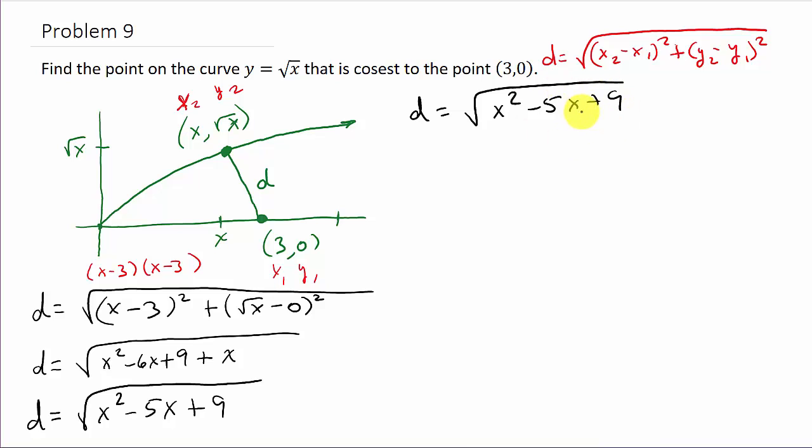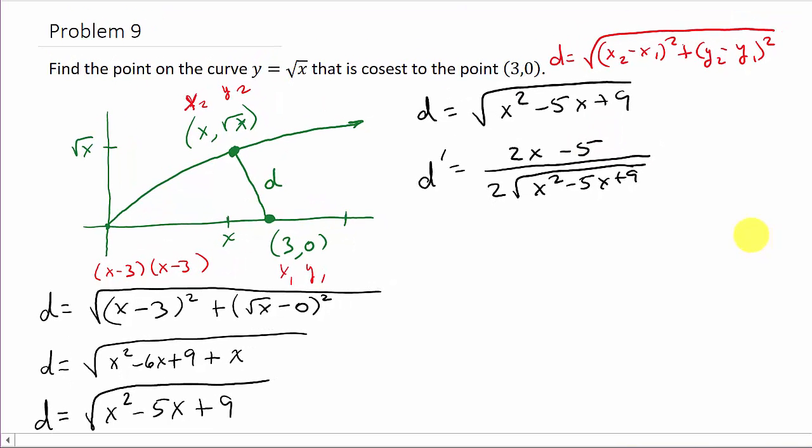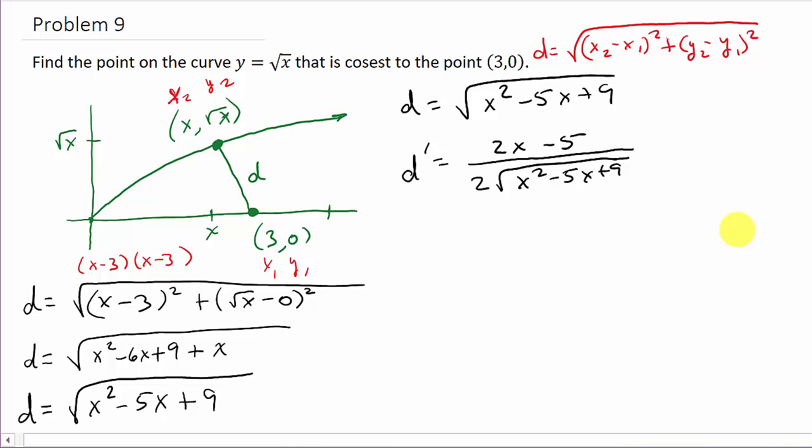We've got to take the derivative of this thing. You would change that to an exponent of 1 half and then use the chain rule. There's a shortcut for finding the derivative of a square root. To take the derivative of a square root, it's 2 times whatever the square root is in the denominator, and in the numerator you put the derivative of what's underneath the square root. So that's just 2x minus 5.